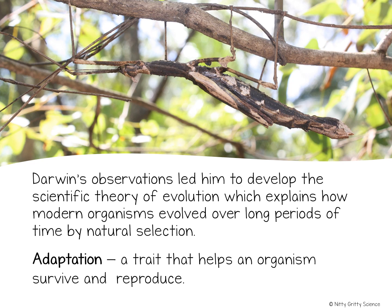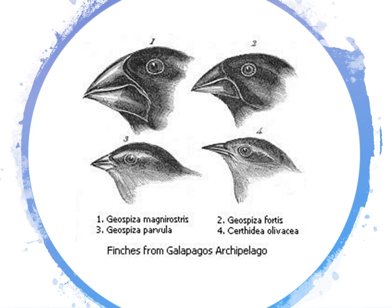Darwin found many similarities between Galapagos organisms and those in South America. He noticed that while they were the same animal, there were important differences between the organisms on the islands and those on the mainland. Iguanas on the islands, for example, had large claws that allowed them to grip slippery rocks, whereas iguanas on the mainland had smaller claws which allowed them to climb trees and eat leaves. As Darwin traveled from one Galapagos Island to the next, he also noticed that the tortoises on one island had dome-shaped shells, while those on another had saddle-shaped shells.